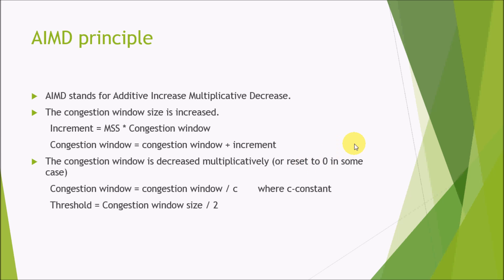The congestion window is decreased multiplicatively. As the name suggests — additive increase, multiplicative decrease. The new congestion window size equals the congestion window divided by some constant, or we can also reset it to 0 in some cases. Here the formula is: threshold = congestion window size / 2. Threshold is a quantity which represents that our window size has reached up to half of the maximum size of the congestion window.